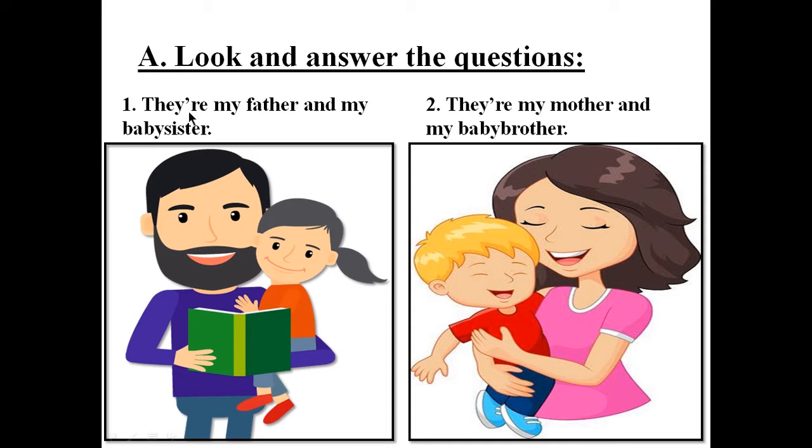As you see here, they are my father and my baby sister. As we have in the picture number two, who are they? They are my mother and my baby brother. They are my mother and my baby brother as you see here we have mother and her baby.